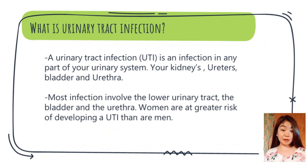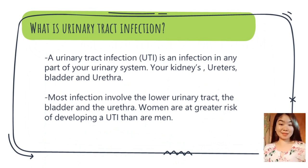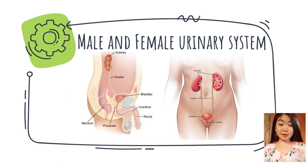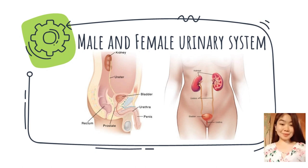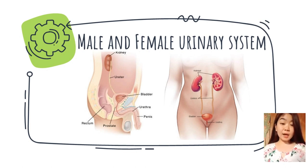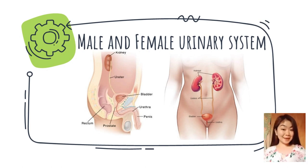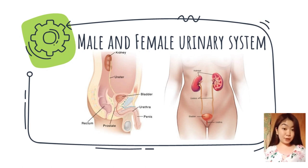Women are at greater risk of developing a UTI than men because a woman's urethra is shorter, allowing bacteria to travel a shorter distance to reach the bladder. Women also cope with hormonal changes over a lifetime, including menstruation, pregnancy, and childbirth. Men can also get UTIs, but it is less common — with odds of about 1 in 20 — because men have a longer urethra, making it harder for bacteria to reach the bladder.